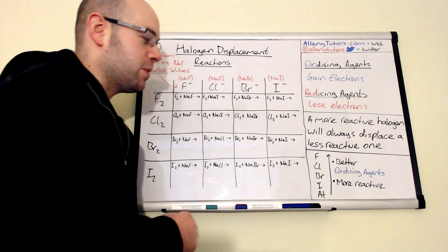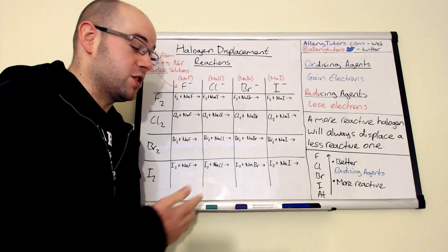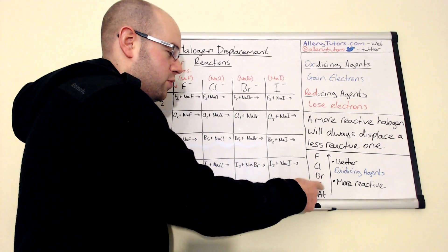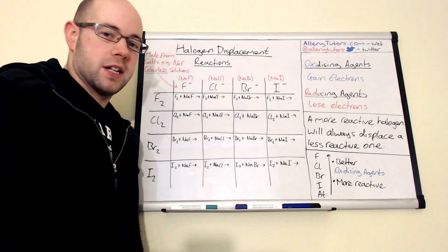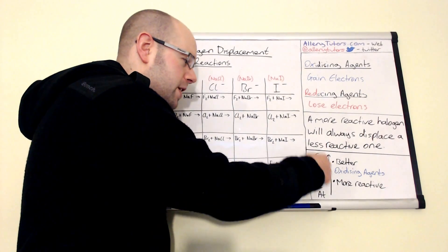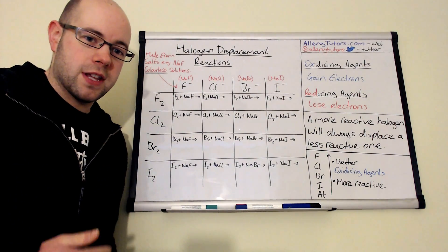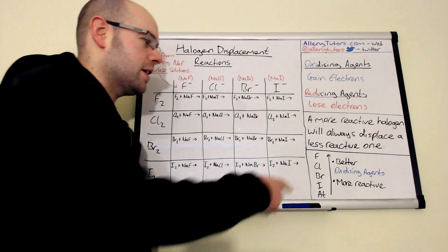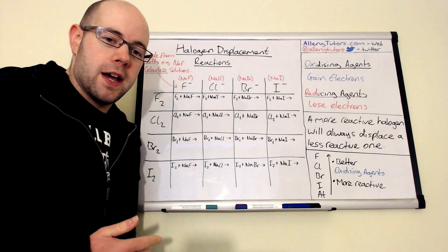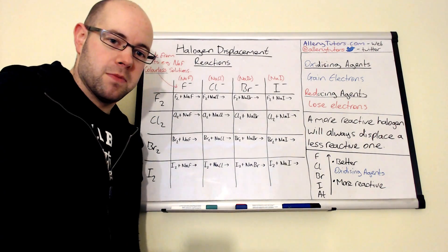We've got a list of halogens here — these are the ones you find in group 7: fluorine, chlorine, bromine, iodine, and astatine. As you go up the group, they actually become better oxidizing agents. That means the halogen at the top, which is fluorine, is more likely to gain electrons than the halogen at the bottom.